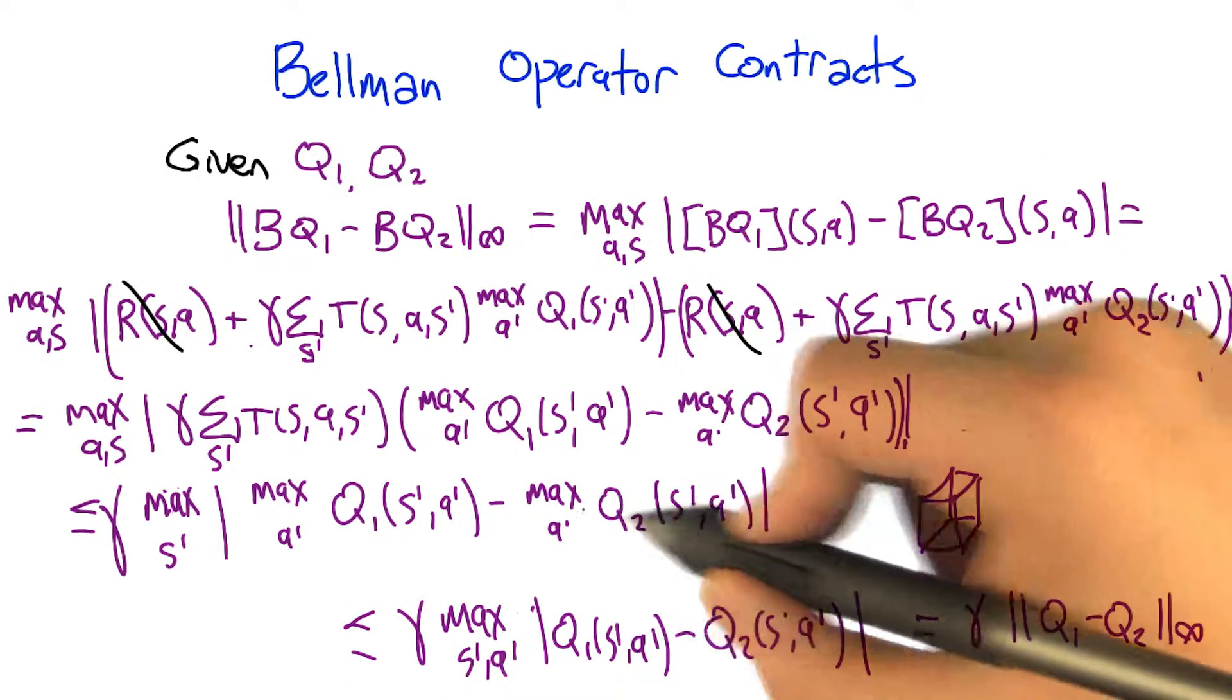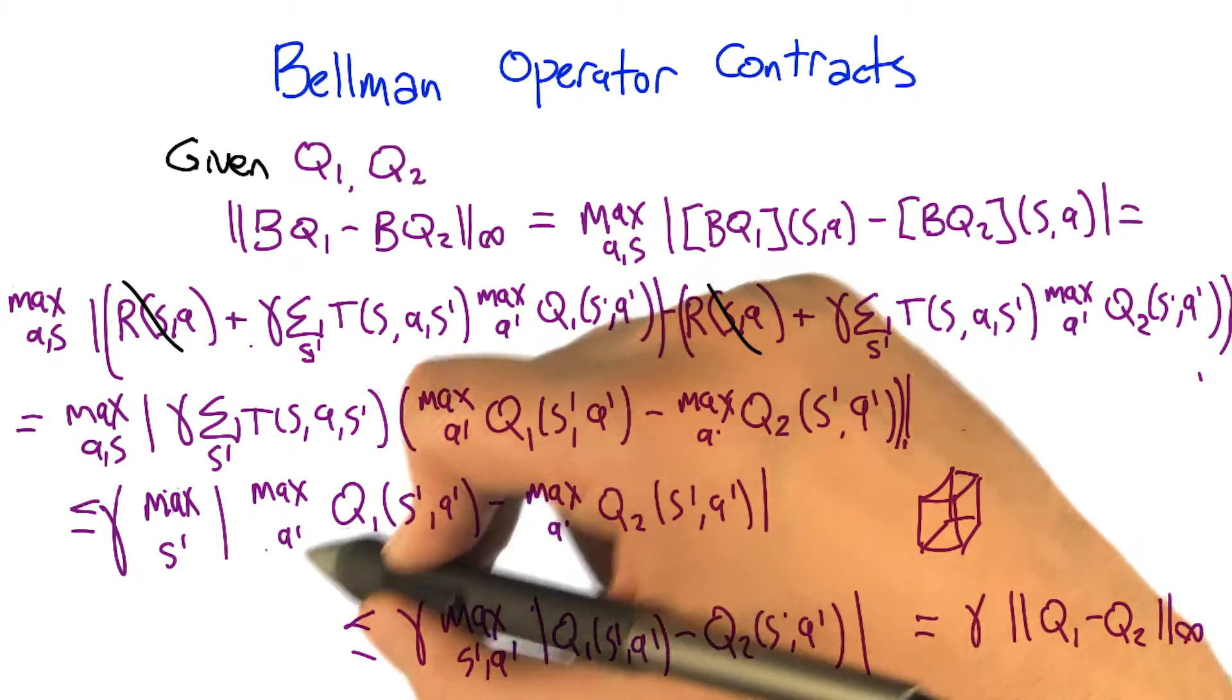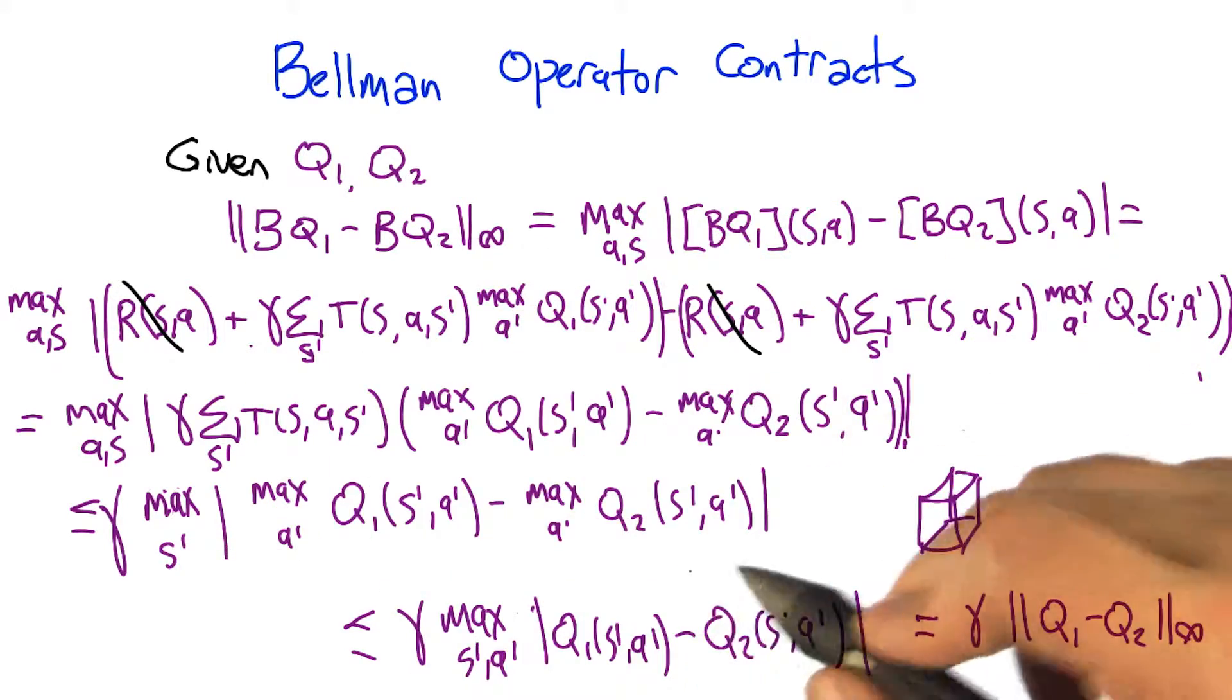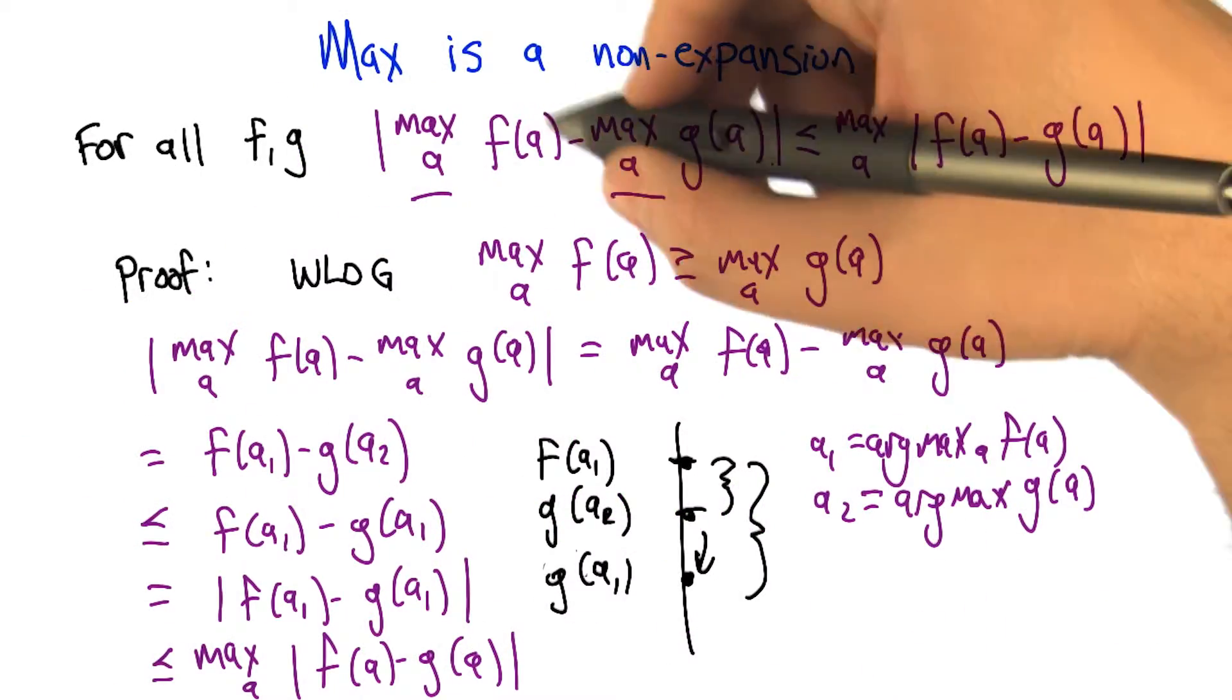And in particular, it was this step right here, where essentially we had to, one way to think about it is move this max out of the absolute value. So if we compare that to what we just proved, that's what we did. We kind of moved the max out of the absolute value.